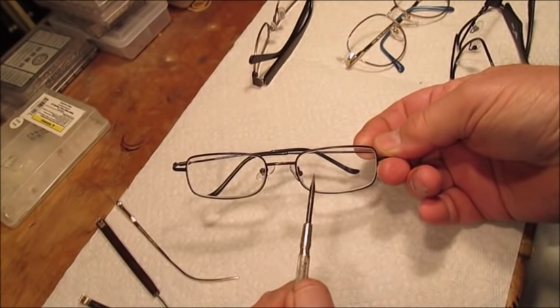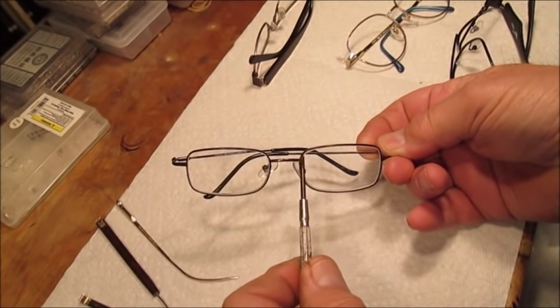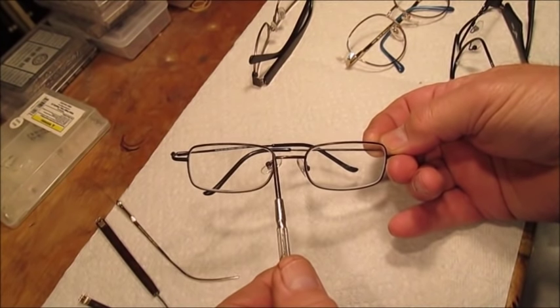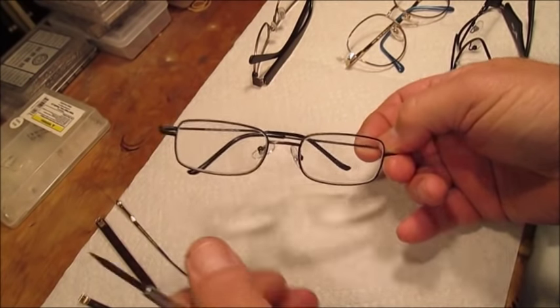Typically the weld at the nose bridge going into the channel material surrounding the lenses is one of the spots that very commonly breaks. This can be as the result of fatigue or the result of adjusting the glasses.